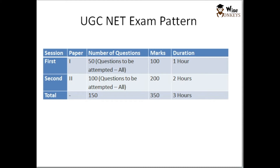So let us understand what is the UGC NET exam pattern. This exam consists of two papers. Paper 1 is the General Aptitude Test. It consists of 50 questions, and you are supposed to attempt all 50 questions. Each question carries 2 marks, so this paper comprises 100 marks. The duration for this paper is 1 hour.